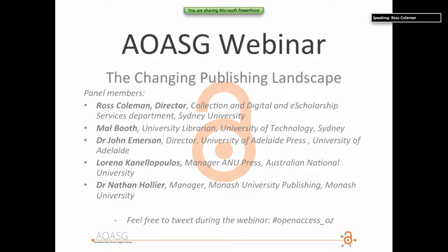One of the interesting things, perhaps relevant to this conversation, which has come out as part of our policy but also as the recent GO8 statement on Open Access to Research Outputs, is the requirement for the university to provide open publishing platforms to facilitate the rapid and open communication of research. In some form, open publishing platforms are enshrined in university policy. The delegation to that policy is from the Deputy Vice-Chancellor Research through the library to provide those platforms.